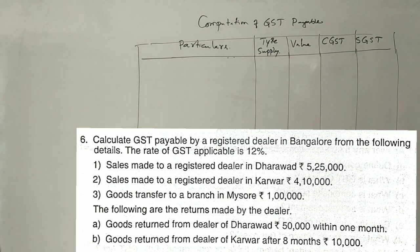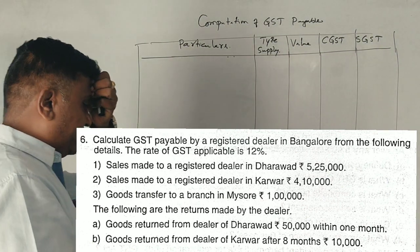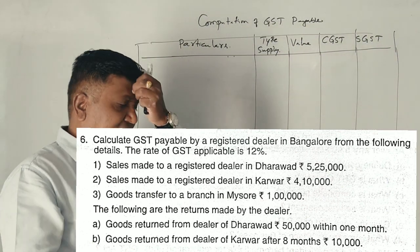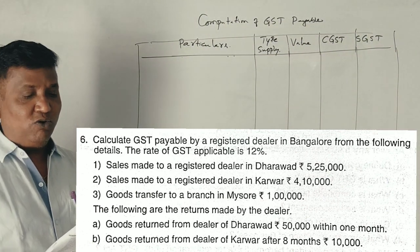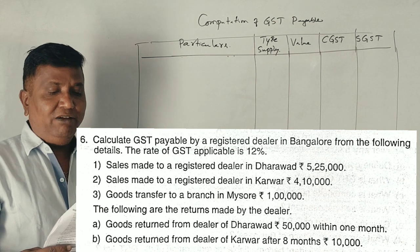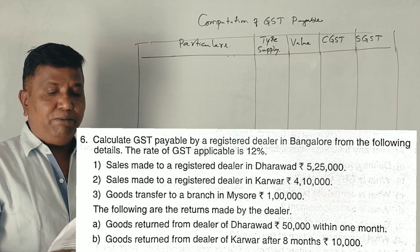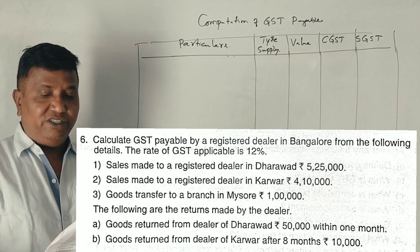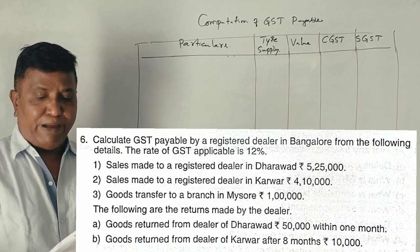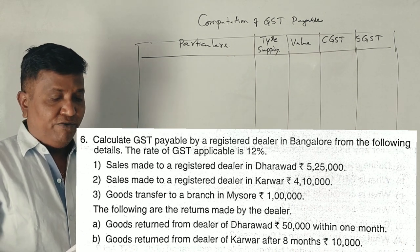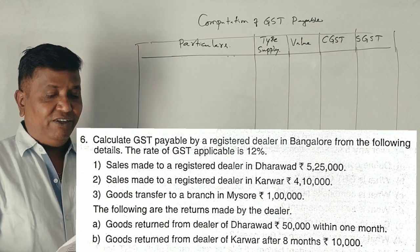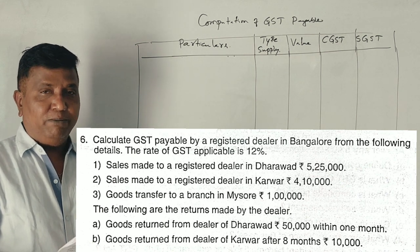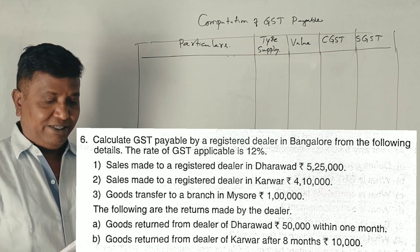This is a 2018 exam question: calculate GST payable by a registered dealer in Bangalore from the following details. The rate of GST applicable is 1%.